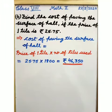Now, the second question is find the cost of paving the surface of hall if the price of one tile is Rs. 25.75. To find the cost of paving the surface of hall, we will multiply price of one tile by number of tiles used. And we get 25.75 into 1800 is equal to Rs. 46,350.